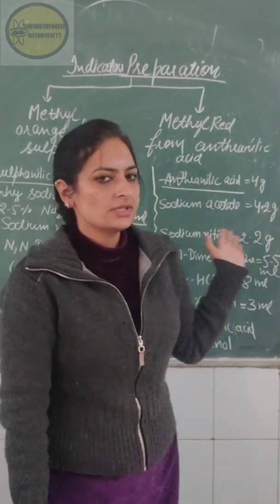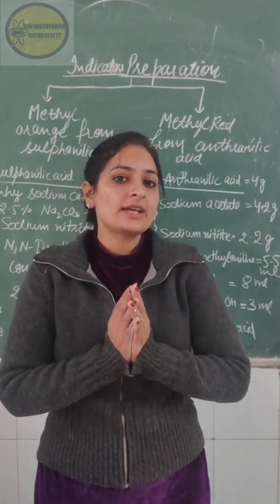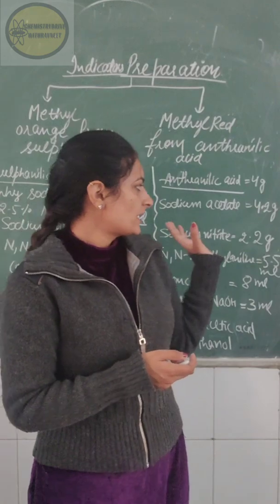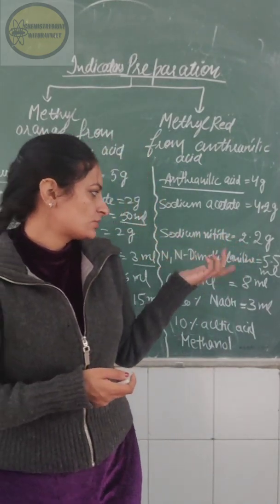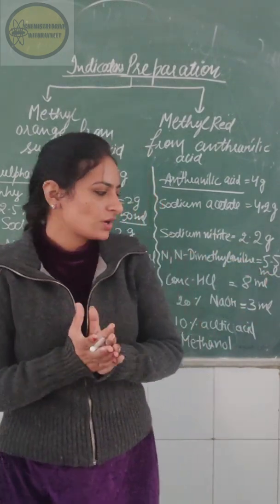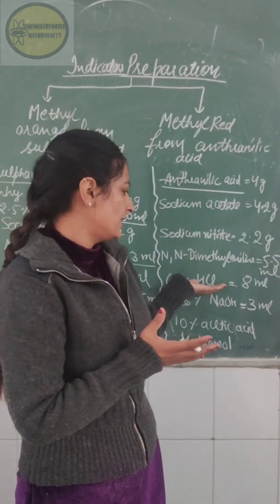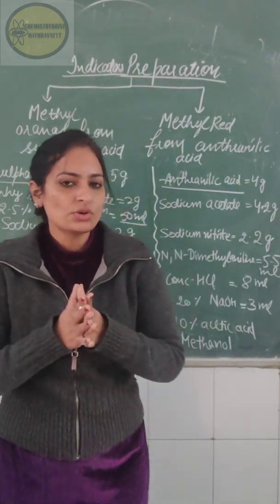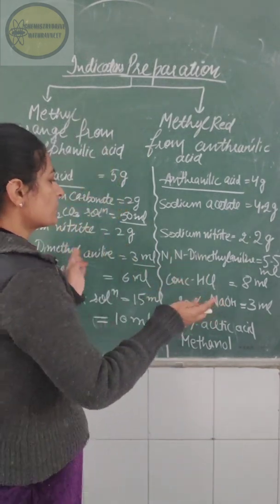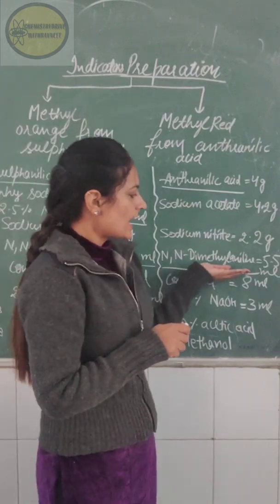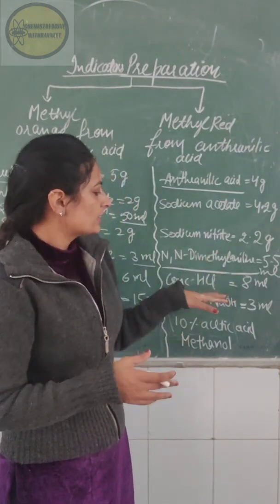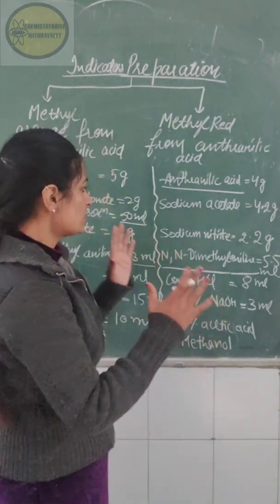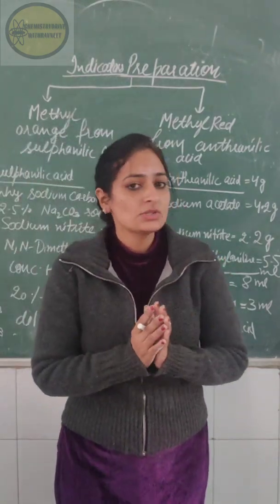This preparation involves two reactions: diazotization and a coupling reaction. First, we perform the diazotization, which means preparing the diazonium salt using sodium nitrite and concentrated HCl. Once diazotization is done, we perform the coupling reaction in which we couple the diazonium salt with an aromatic amine. In both preparations we use N,N-dimethylaniline as the aromatic amine. The mechanism is almost similar for both.